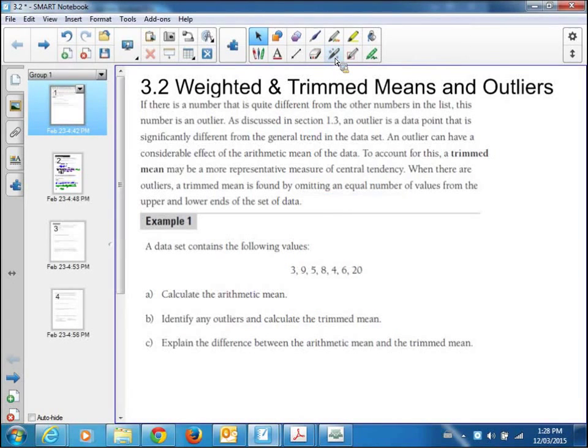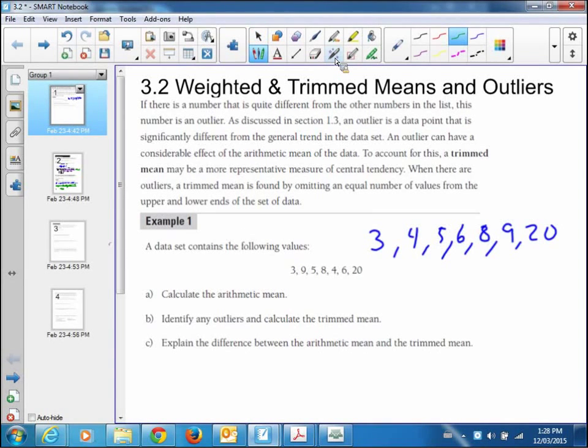The data set contains these values: 3, 4, 5, 6, 8, 9, and 20 in order. See how 20 is way above. Maybe these were times or something like this, and then one person took 20 minutes to walk across a school yard, a big school yard. So 20 is definitely an outlier.